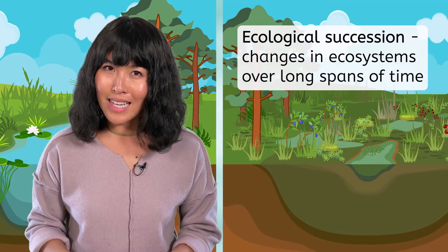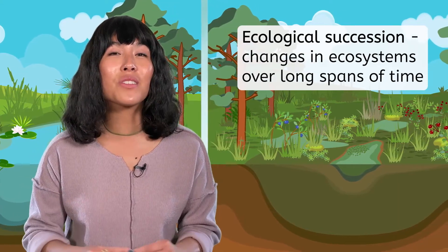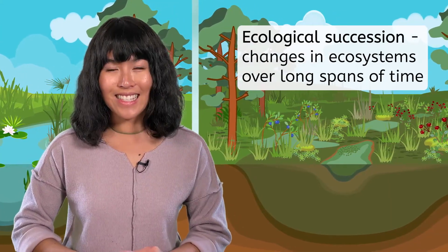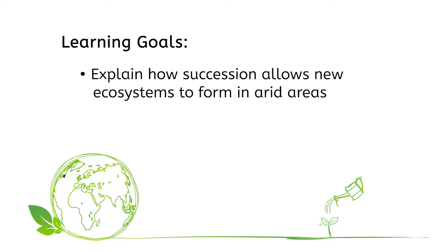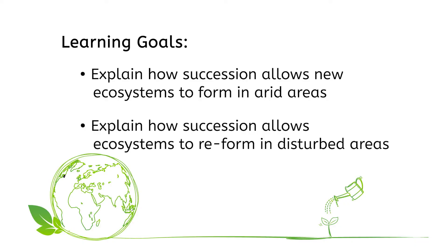We'll take a look at the steps of ecological succession in today's lesson. But before we get started, let's look at our goals for this lesson. By the end, you'll be able to explain how succession allows new ecosystems to form in arid areas, and explain how succession allows ecosystems to reform in disturbed areas.